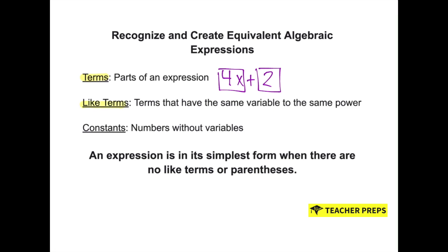The next word is like terms. These are terms that have the same variable to the same power. 2x and 3x are like terms because they both have an x to the same power. 3m squared and m squared are also like terms because they both have an m to the second power.